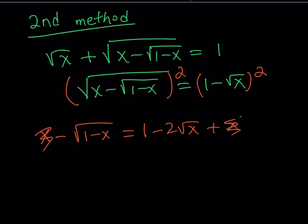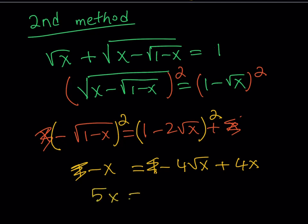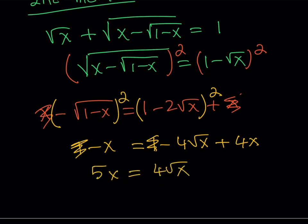We can put the radicals on the same side, but instead let's just square both sides again. If we square the left side, the negative sign makes it positive, so we get 1 minus x. The right-hand side, again as (a minus b) squared, gives 1 minus 4 times the square root of x plus 4x. The 1 cancels out, and putting the x's on the same side — switching to make everything positive — gives us 5x is equal to 4 times the square root of x.